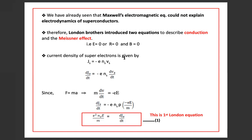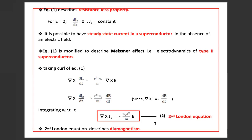The current density of superelectrons is given by Js equal to minus e Ns Vs. Differentiating this with respect to time and using F equal to MA, we get e² Ns e upon m equal to dJs upon dt. This is the first London equation, which describes the resistanceless property. For E equal to 0, dJs upon dt equals 0, showing that current density is constant. Thus, it is possible to have a steady state current in a superconductor in the absence of an electric field.